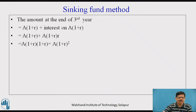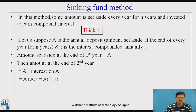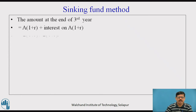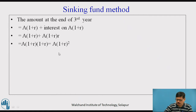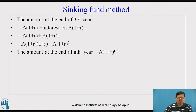Therefore, taking A common, we get A(1+R)(1+R), which is A(1+R)². So the amount at the end of the second year is A(1+R)¹, and the amount at the end of the third year is A(1+R)². Similarly, by analogy, the amount at the end of the nth year will be equal to A(1+R)^(n−1), because at the end of the third year it is (3−1)=2. So on the same analogy, the amount at the end of the nth year equals A(1+R)^(n−1).